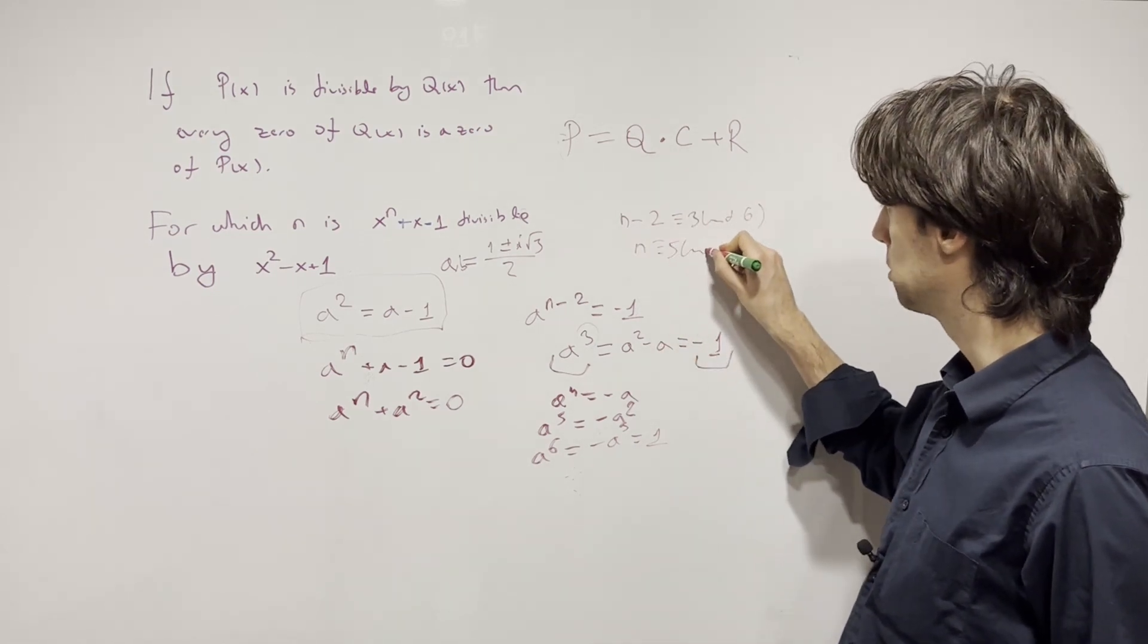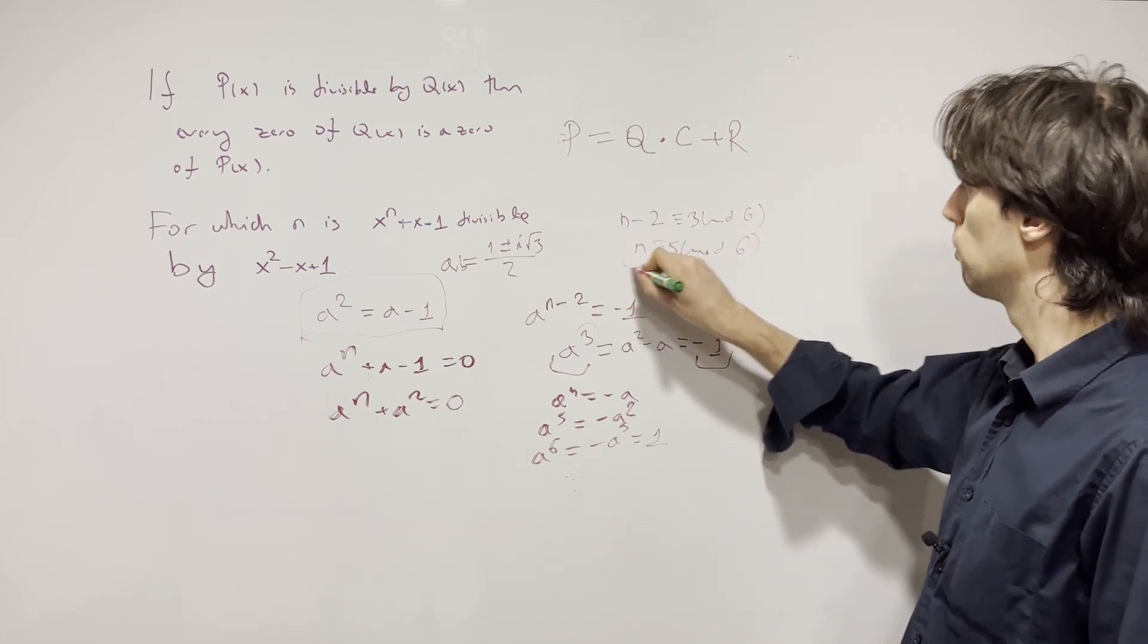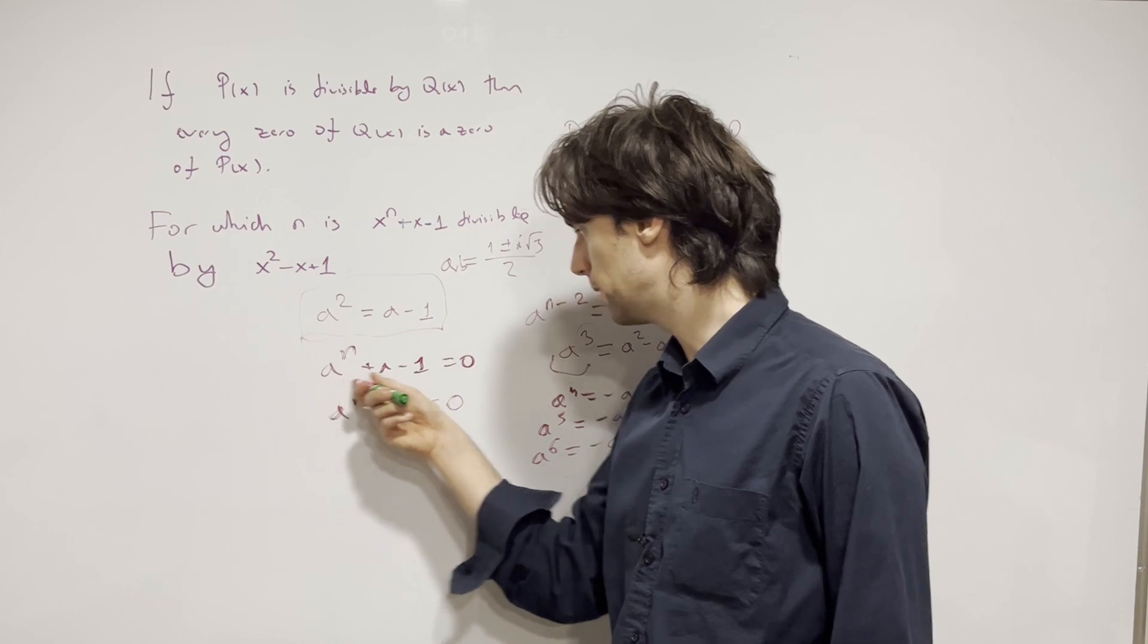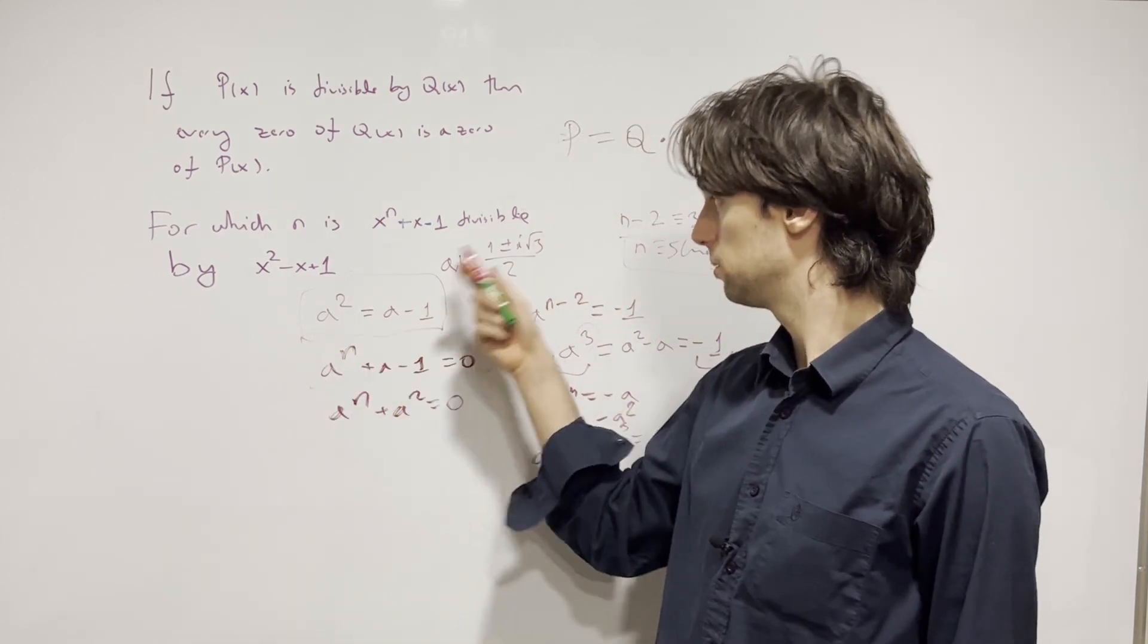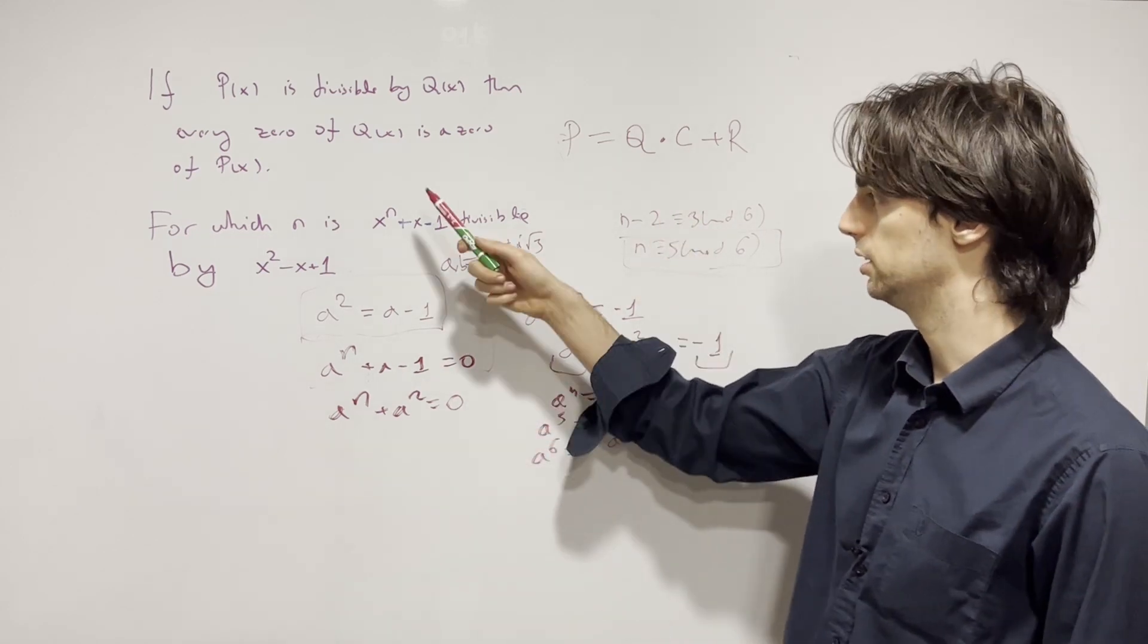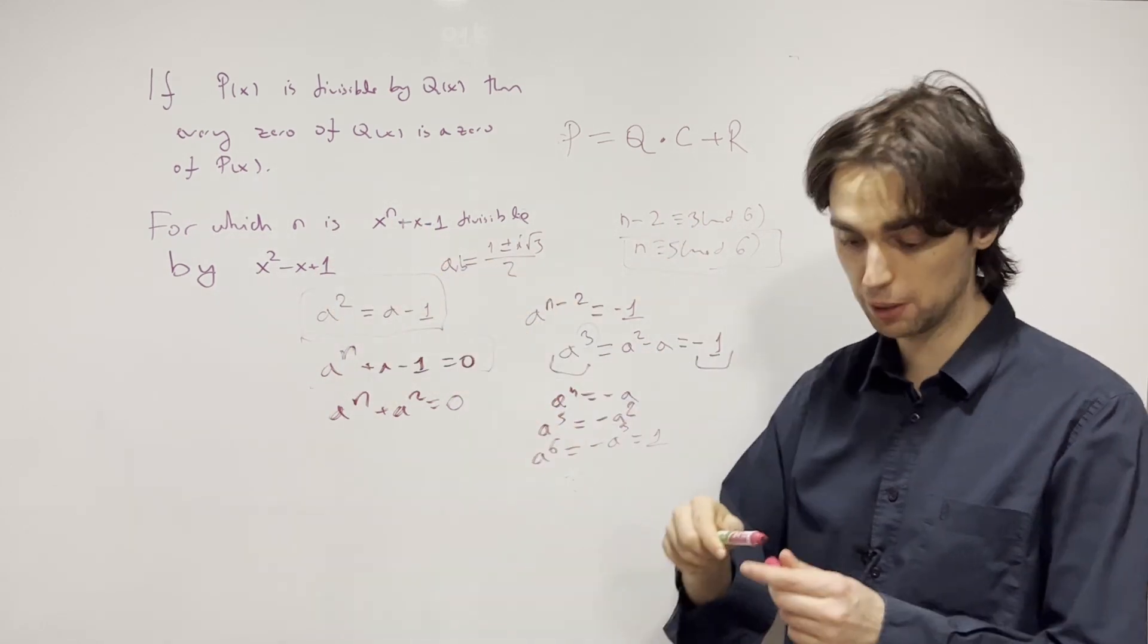So n minus two is congruent to three modulo six. In other words, n is congruent to five modulo six. So for n congruent to five modulo six, this thing is going to be zero for both of these roots, for both a and b, and therefore this polynomial is going to be divisible by this one.